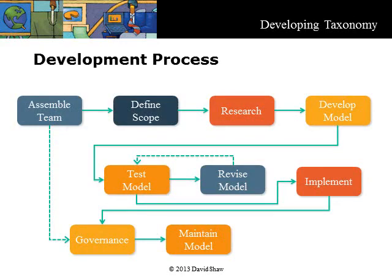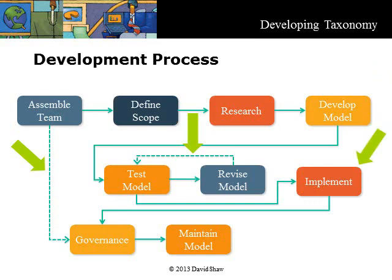This is the development process from Part 2, with a bit more detail added. The dotted line at the left signifies that the Governance Committee should be struck shortly after assembling the project team. A bit more detail is shown in the test, revise, and implement sequence. Tests and revisions are repeated until the taxonomy is finalized and approved. After an acceptance test, it is implemented. As you will see in the next module, this basic process is also used in developing metadata with the addition of another step.